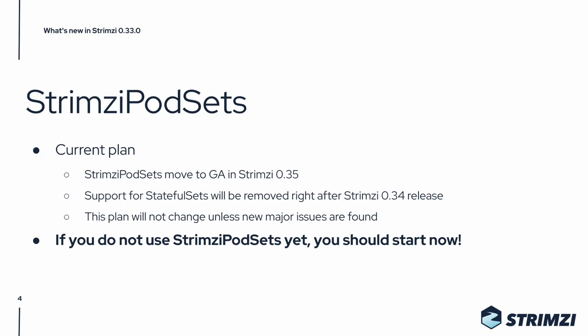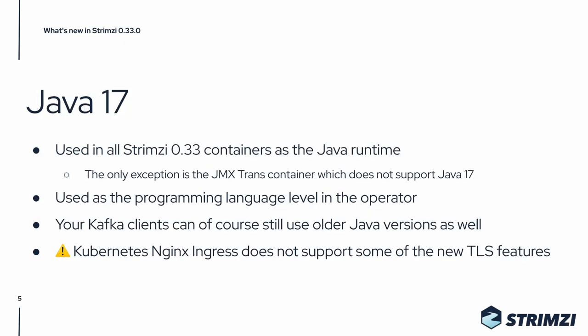Now let's have a look at the main new features. One of them is the move to Java 17. It is used in all of the Strimzi 0.33 containers as the Java runtime. The only exception is the jmxtrans container because jmxtrans doesn't support Java 17. Java 17 is also used as the programming language level in our operators. This does not affect in any way your Kafka clients, which can still use any other Java versions as you want.